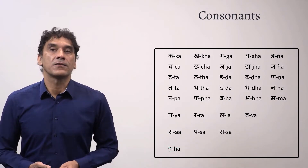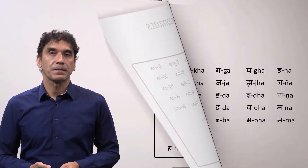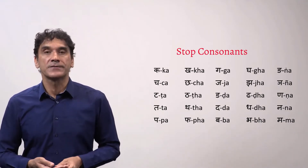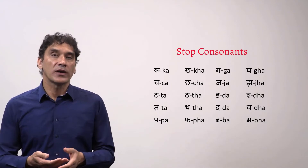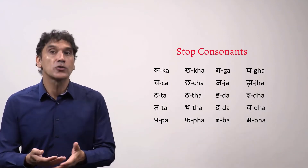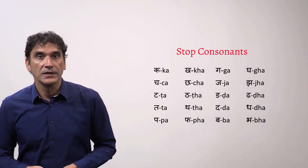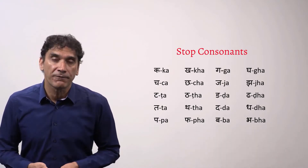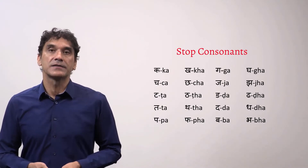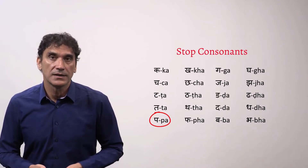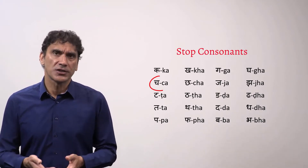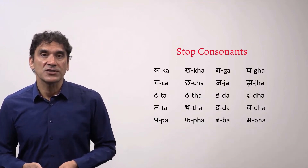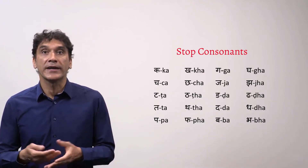Let's take the first set of consonants — the first five rows and the first four columns. These are all stop consonants, also called plosive consonants. A stop consonant is a sound made by completely blocking the flow of air and then releasing it. If you try to stretch the sound of a stop consonant, you cannot do it.